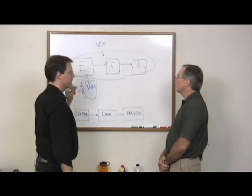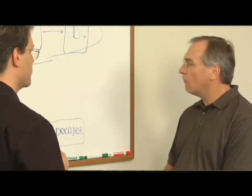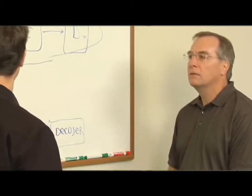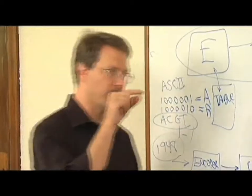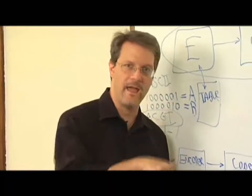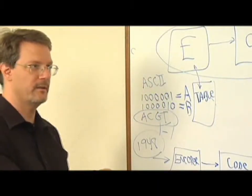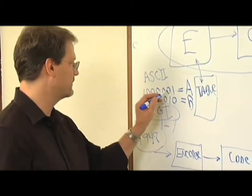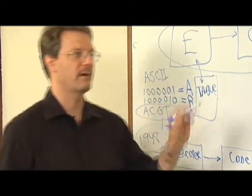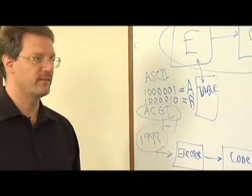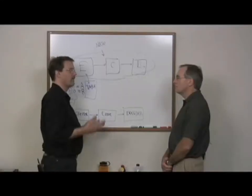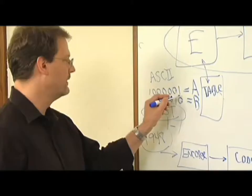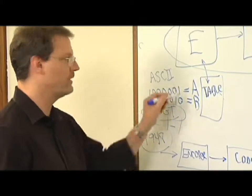Does the code have the meaning itself? Is that what you mean by symbol? So I press an A on my computer keyboard and a 1-0-0-0-0-0-1 goes across the wire. And then on the other side the computer goes, oh, that's an A. Well, this is not an A. This is a symbol for an A.